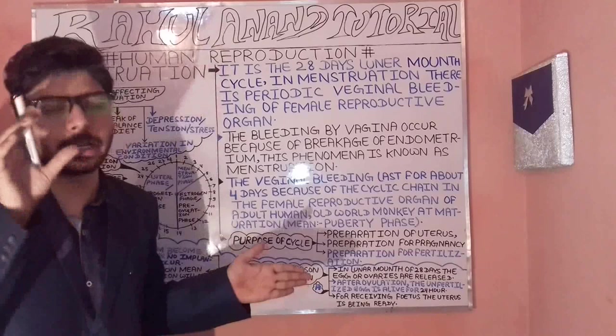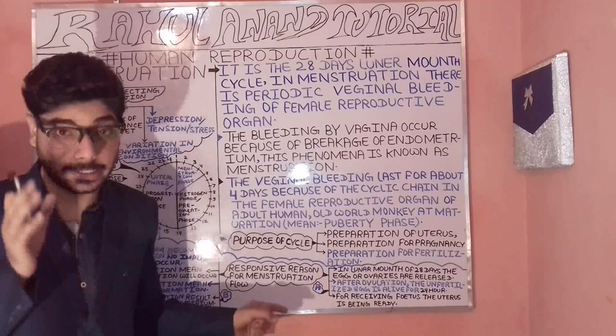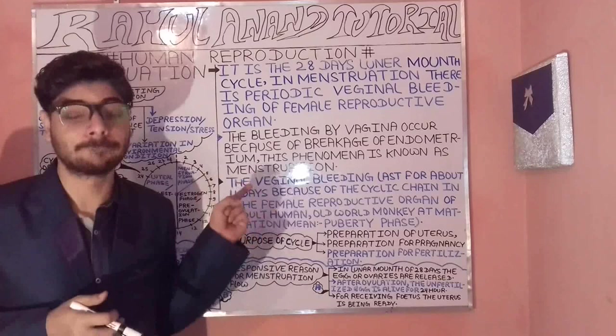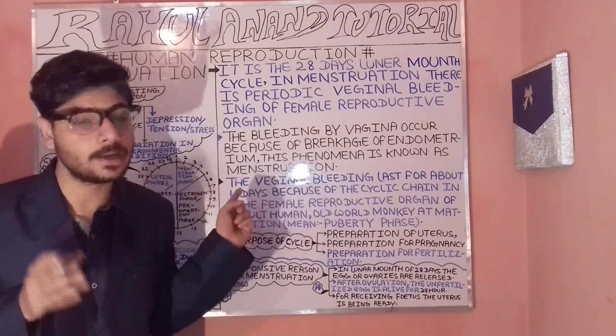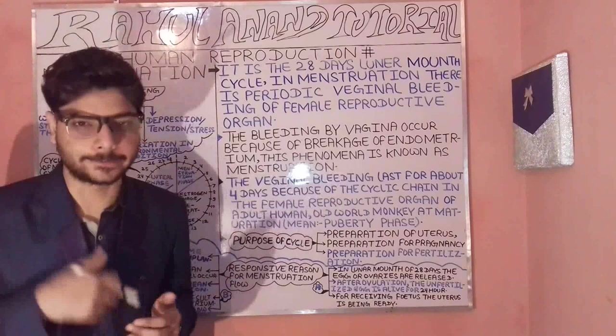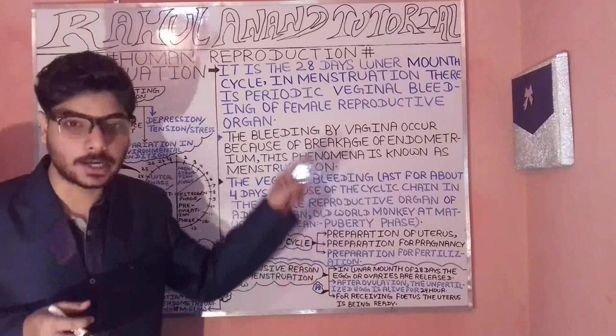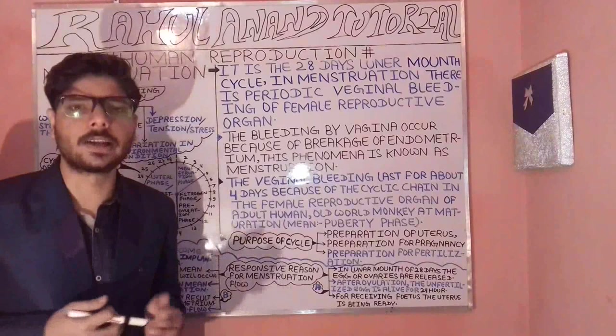So we have covered the concept of menstruation — its purposes, reasons for menstruation flow, and the factors affecting the menstrual cycle such as pregnancy, weak health status, environmental variation, and lack of balanced diet. We have also understood the different phases of the cycle.